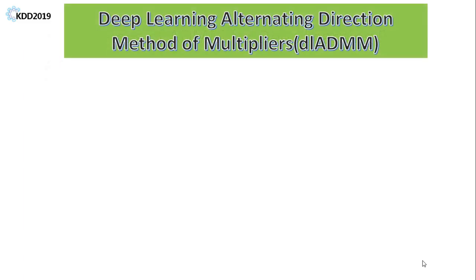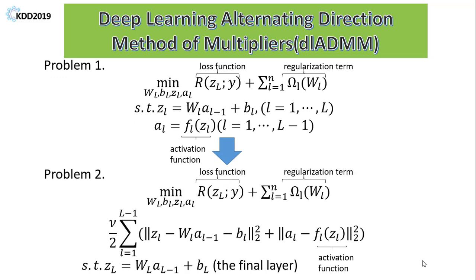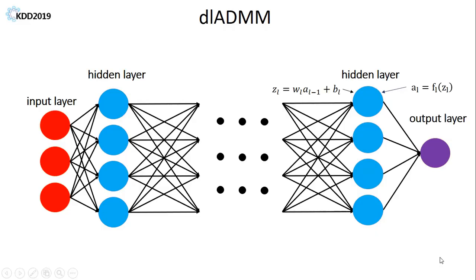In this work, we propose a novel Deep Learning Alternating Direction Method of Multipliers, or DL-ADMM, framework. Specifically, given a fully connected neural network formulation of problem 1, we relax it into problem 2, where only the linear constraint of the final layer is imposed.